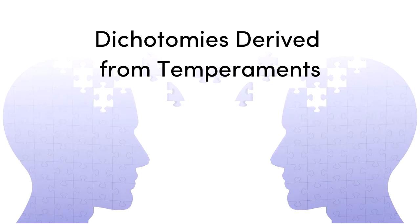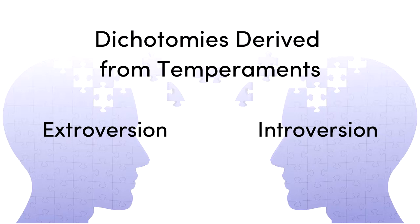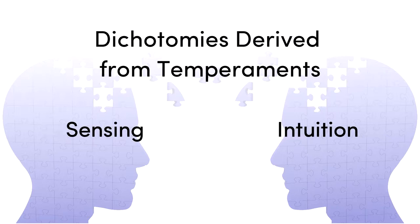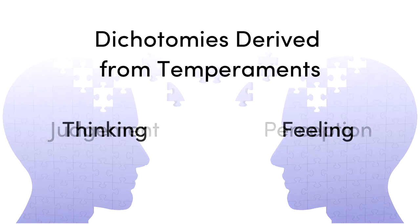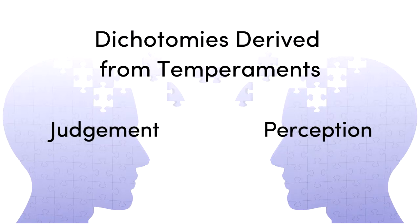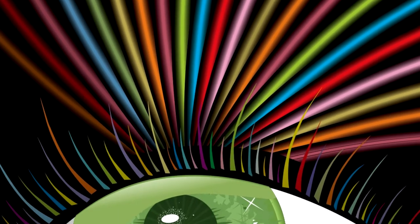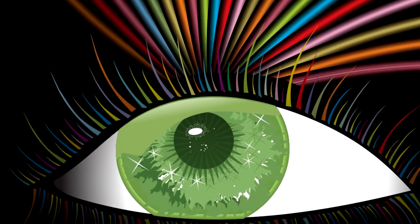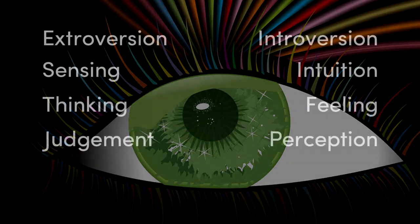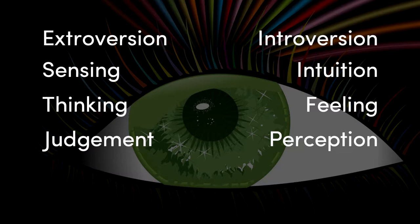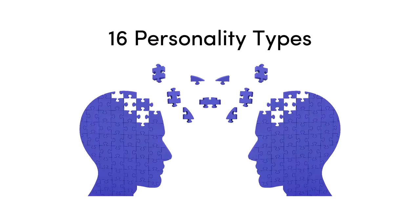Derived from these temperaments are four dichotomies: extroversion or introversion, sensing or intuition, thinking or feeling, and judgment or perception. Each dichotomy addresses different aspects of how we see the world. The preferences selected within each dichotomy identifies personality type. There are 16 distinctly different personality types, and no personality type is wrong or better.